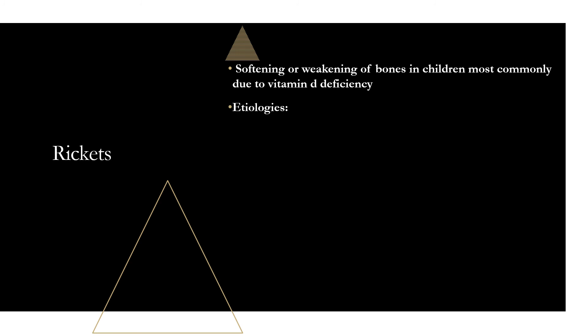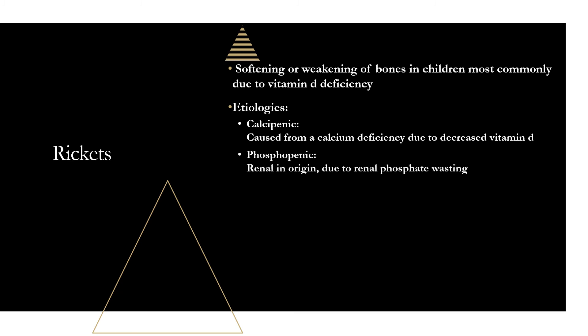There are two etiologies. First is calcipenic rickets — calcium deficiency due to decreased vitamin D, so the patient can't absorb calcium from food. The second is phosphopenic rickets, which is renal in origin and due to renal phosphate wasting.